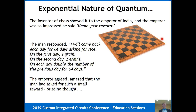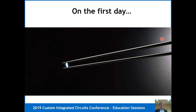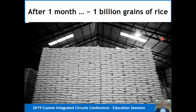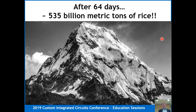The inventor said he'd come back each day for 64 days — the number of squares on the board — asking for one grain of rice the first day, two the second, four the third, doubling each day. The emperor thought it was a small ask. After a week, 127 grains. After a month, a billion grains — it fills a warehouse. After 64 days, you'd have the amount of rice to fill Mount Everest, about 1,000 times the yearly production of rice. That is what exponentials do for you.